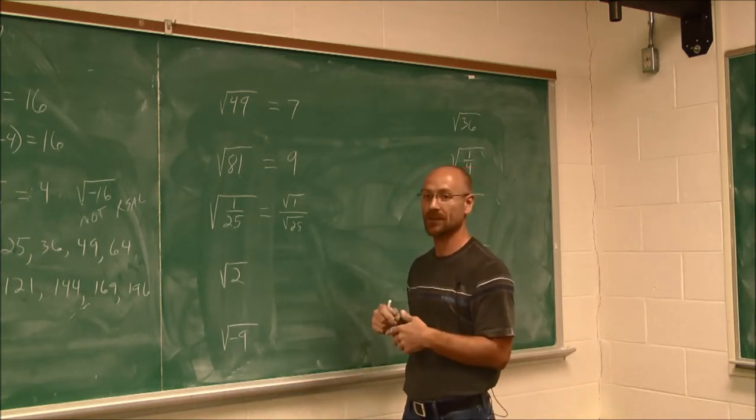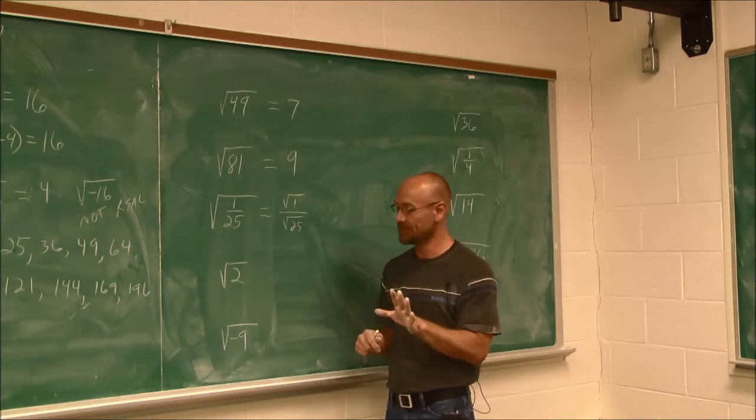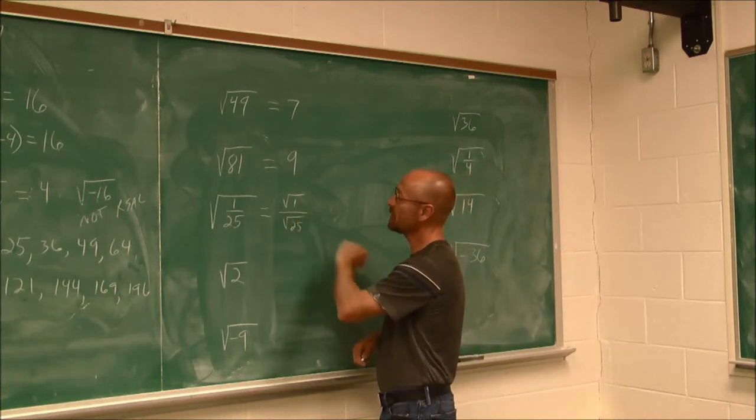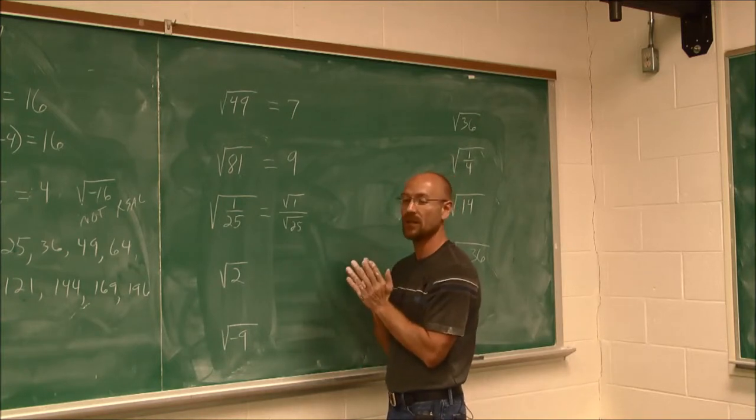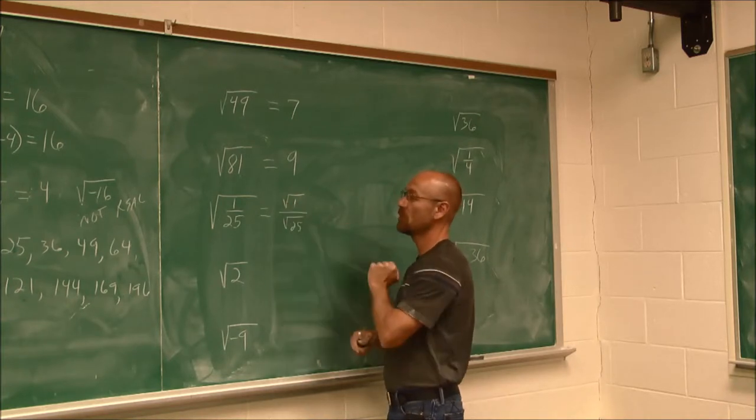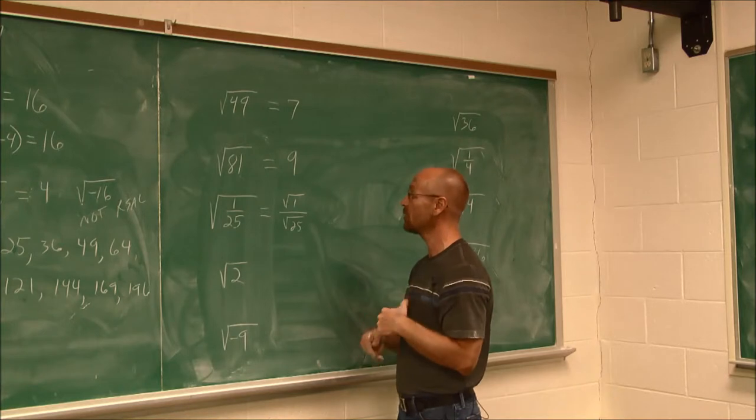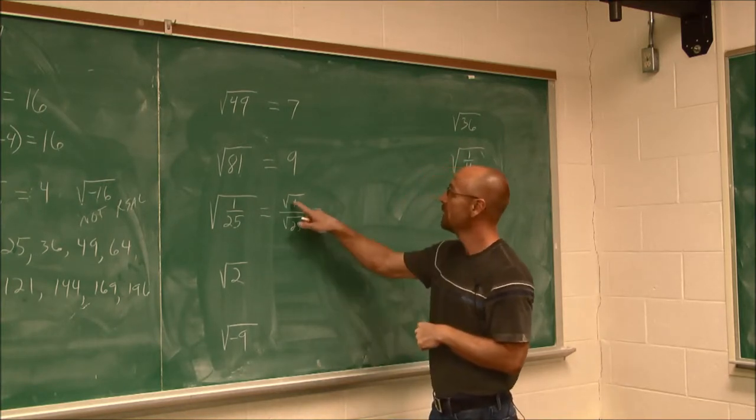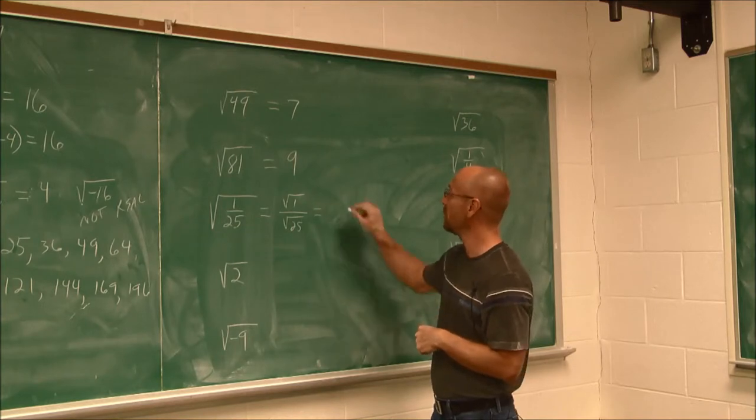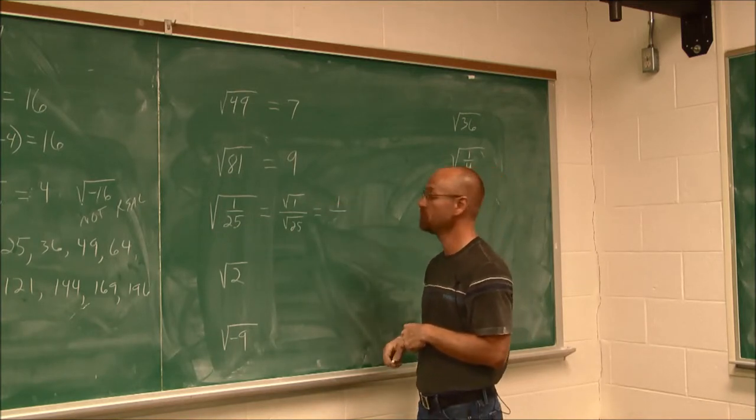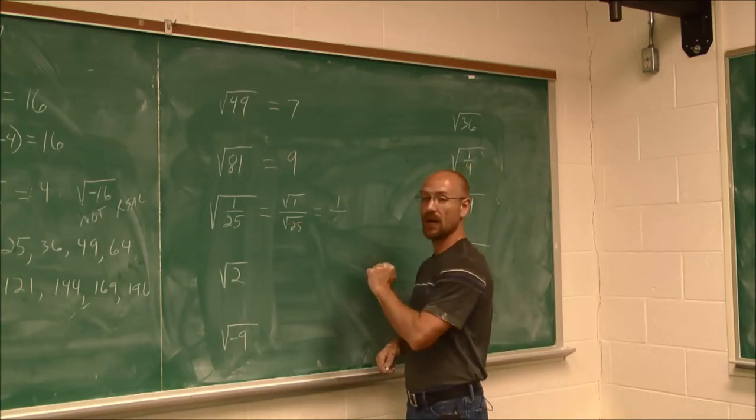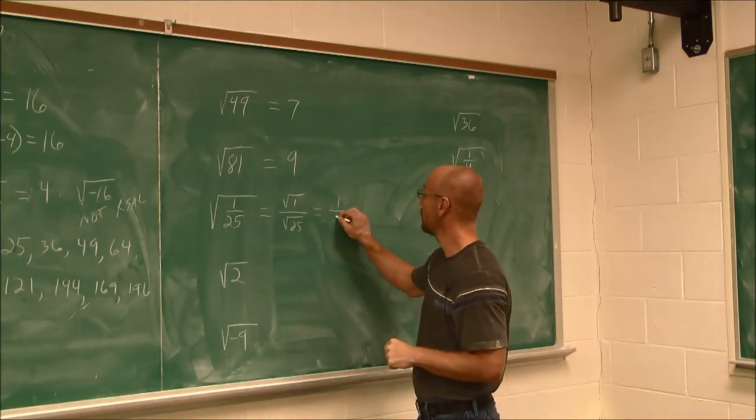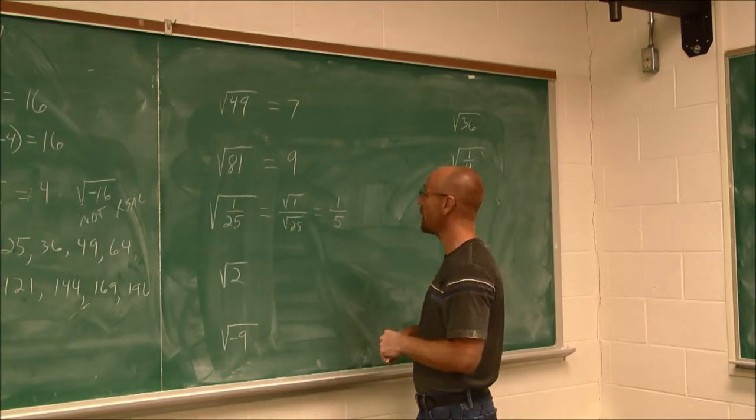So if we think of it this way, now I can just take it one number at a time. What is the square root of 1? Well, 1 is a perfect square. 1 is actually a unique number that it's a perfect any power number. So 1 times 1 would give me 1. So the square root of 1 is 1. The square root of 25. I recognize 25 to be a perfect square. It's 5 times 5. So the square root of 25 is 5. This square root of 1/25th turns out to be 1/5th.